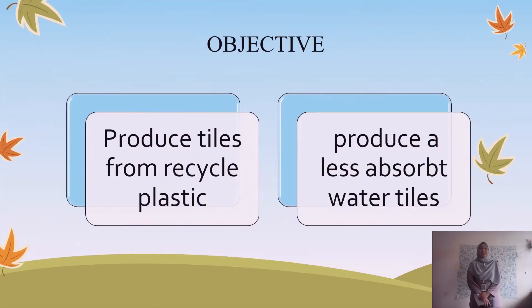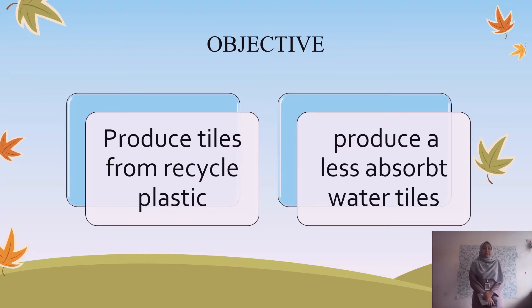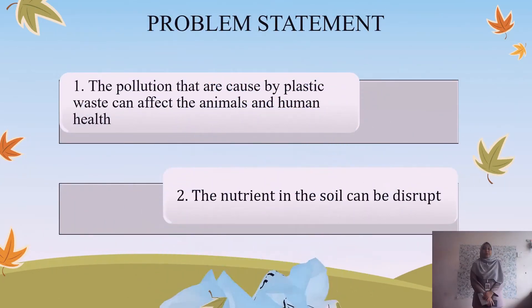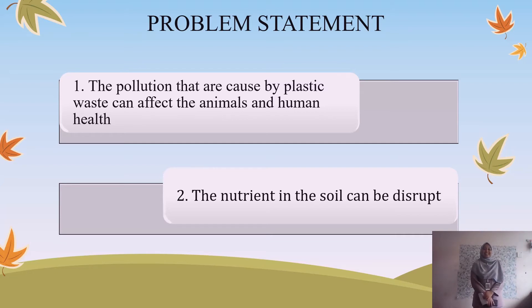My name is Noh Nani. I will present about the objective. First, produce tiles from recycled plastic. Second, produce tiles with less water absorption. Regarding the problem statement: first, the pollution caused by plastic waste can affect animal and human health. Second, the nutrients in the soil can be destroyed.